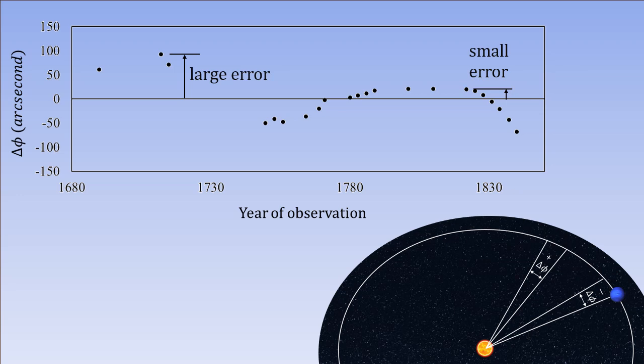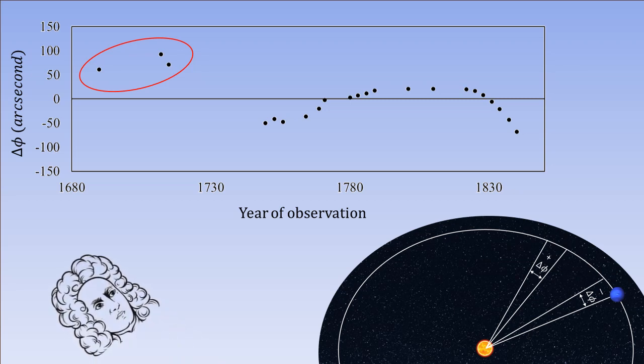Such discrepancies had bothered the astronomers of the day deeply. Astronomy was supposed to be the science of precision. Such violations were sacrilege. Some argued that perhaps the measurements carried out in the 1700s were not as accurate. Others said that perhaps Newton's laws do not hold as good so far away from the Sun.